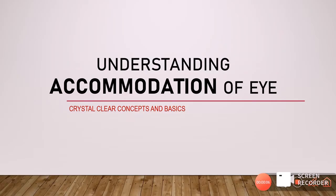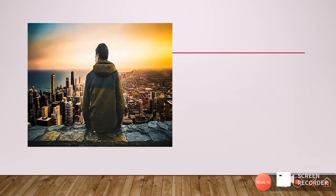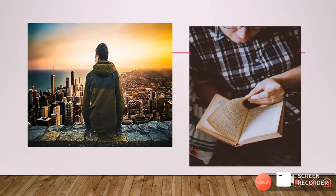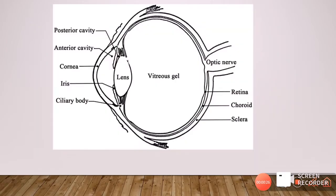Welcome to another lecture on refraction. Today we are trying to understand what is accommodation, right from the basics. A normal eye which does not have any refractive error can look at far and near objects quite easily and clearly. To understand accommodation, let's try to understand the total power and the refractive power of the eyeball.